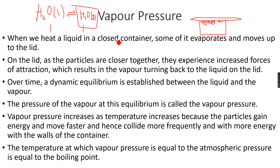The temperature at which the vapor pressure is equal to the atmospheric pressure is equal to the boiling point. This makes a lot of sense because if the vapor has enough pressure to overcome the atmosphere, then all of the liquid can form gas — it can escape upwards because it can overcome the atmospheric pressure. When vapor pressure equals atmospheric pressure, the liquid starts boiling.